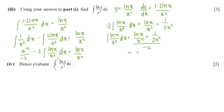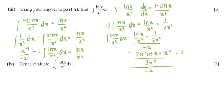Making the denominator the same gives 2x squared·ln(x) plus x squared in the numerator. When you simplify, you get 2·ln(x) plus 1 over negative 4x squared plus C, since it is an indefinite integral. The limits for evaluation are 2 and 1.